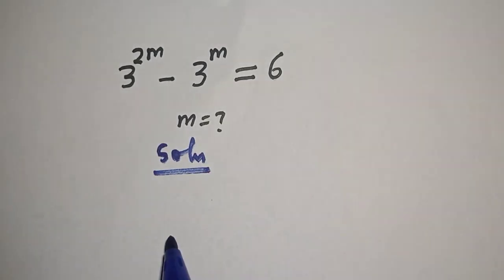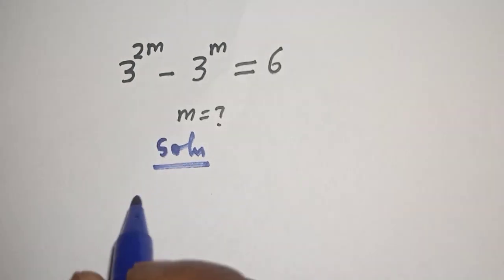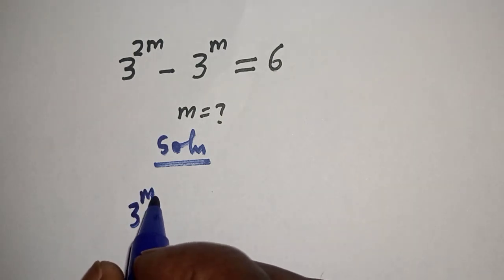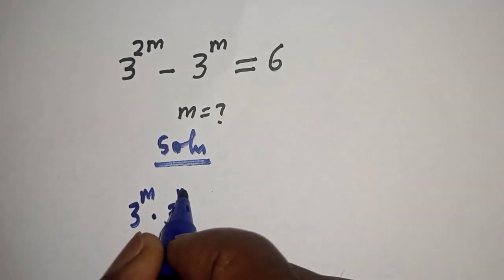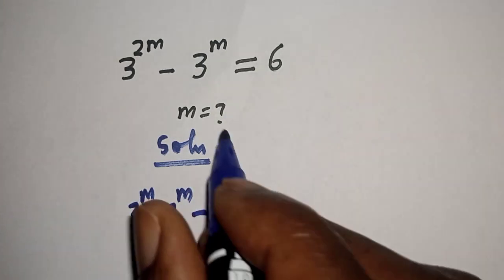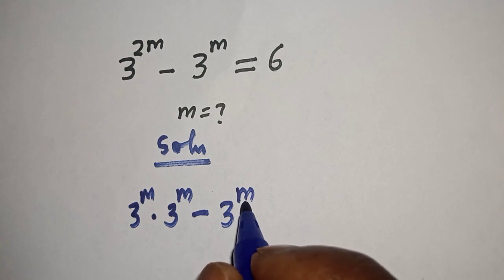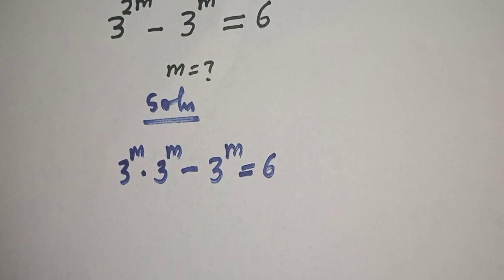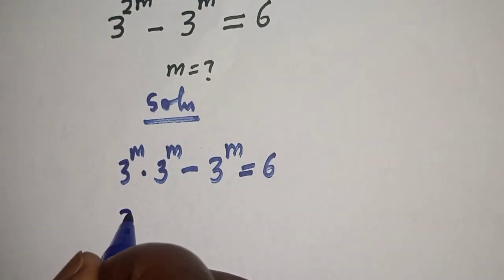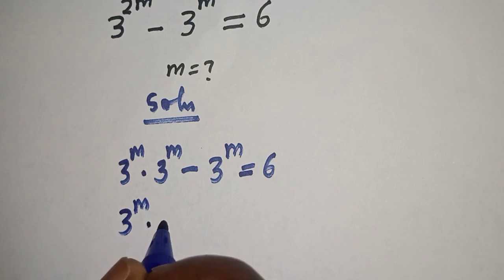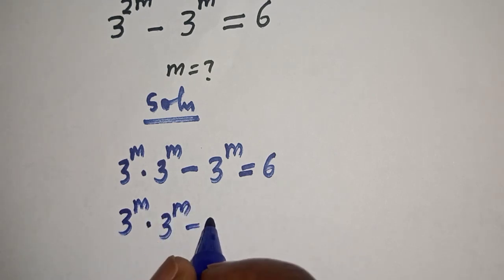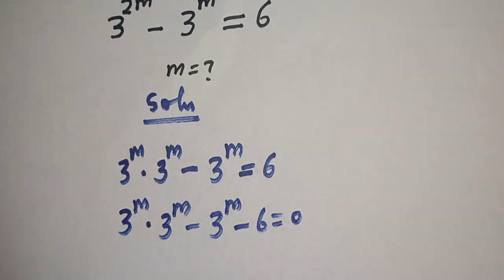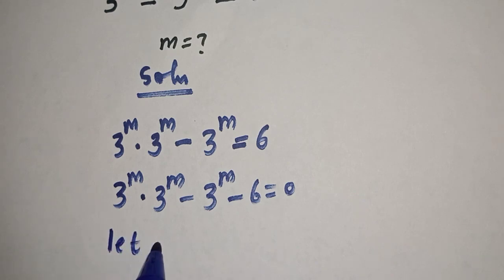3 raised to power 2m can be written as 3 raised to power m multiplied by 3 raised to power m, minus 3 raised to power m is equal to 6. Rearranging: 3 raised to power m multiplied by 3 raised to power m, minus 3 raised to power m, minus 6 is equal to 0.